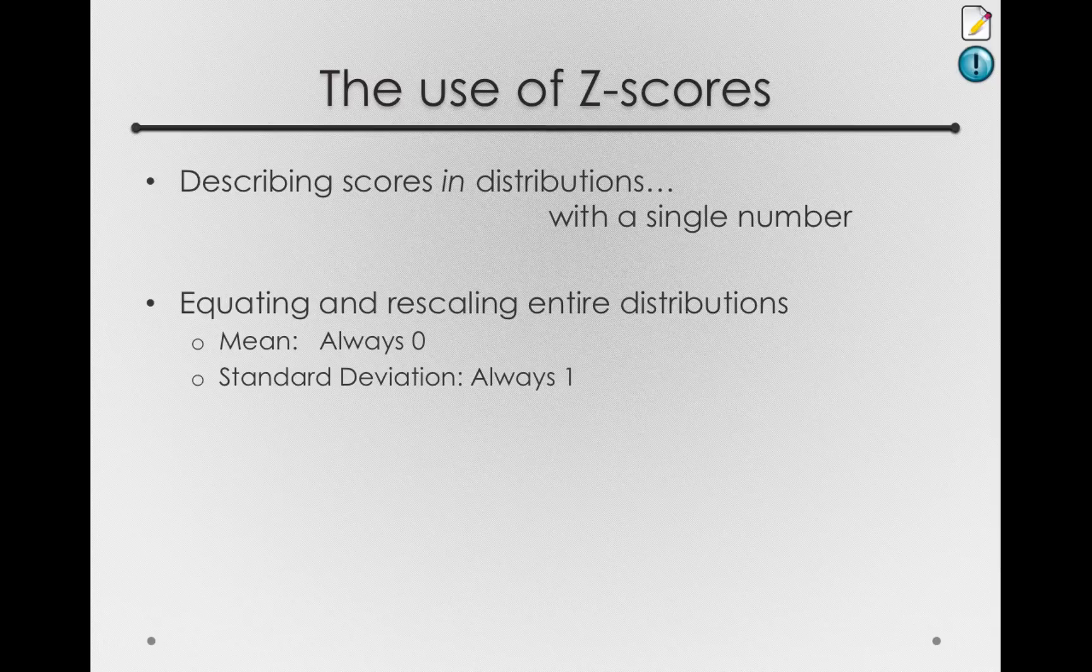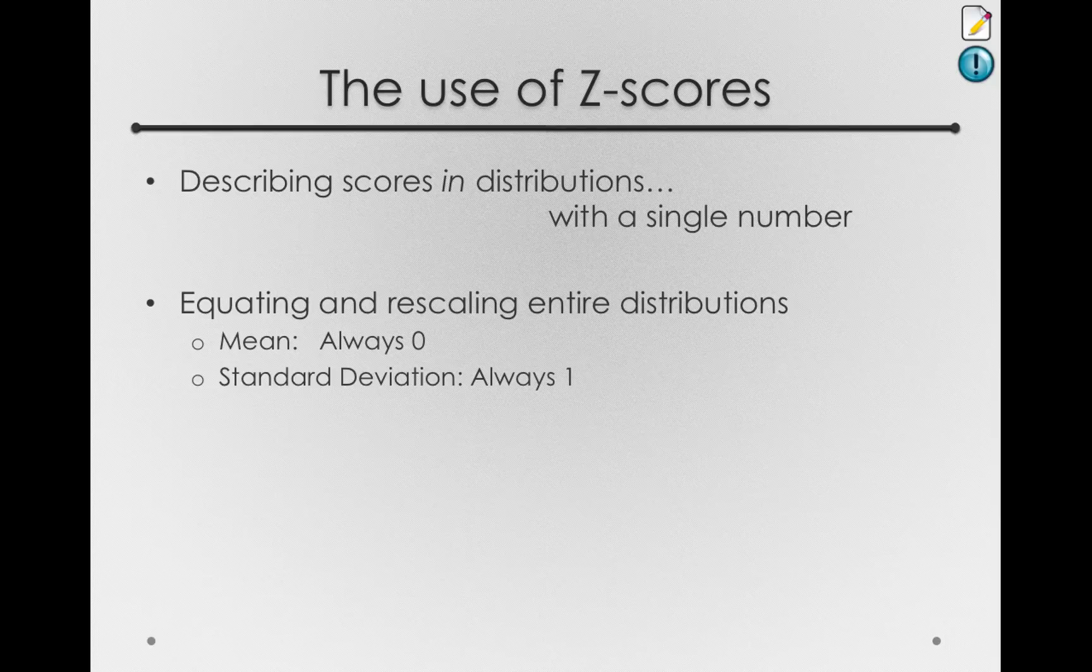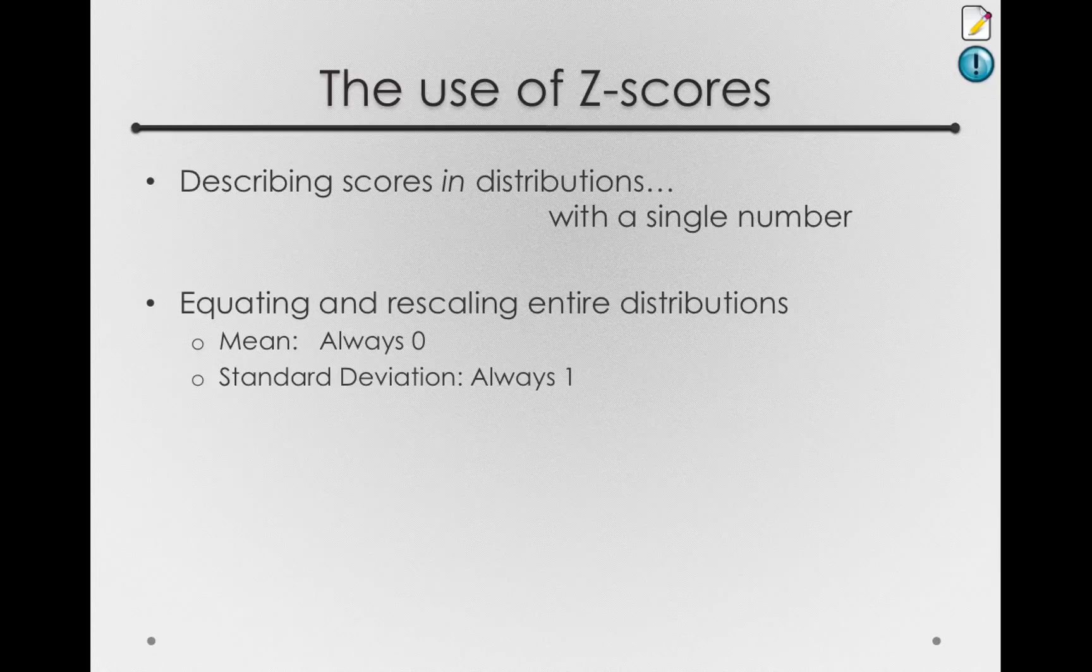If you scored one standard deviation above average, that is, your value was one standard deviation above the mean, your z-score would have to be 1. Thus, the typical distance in a rescaled distribution is just 1.